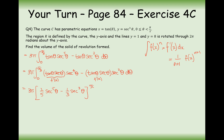Substituting the limits: at θ = π/3, sec θ = 2, giving (1/5)(32) = 32/5 for the first term and (1/3)(8) = 8/3 for the second. At θ = 0, we get 1/5 − 1/3. Simplifying everything gives a final answer of 58π/5.